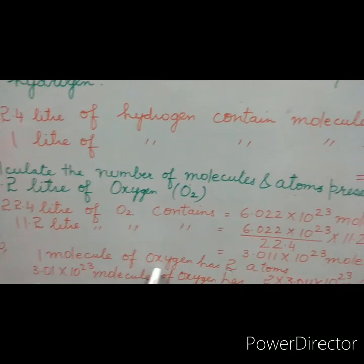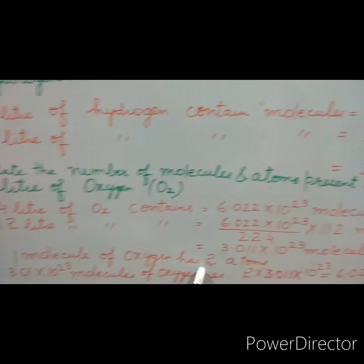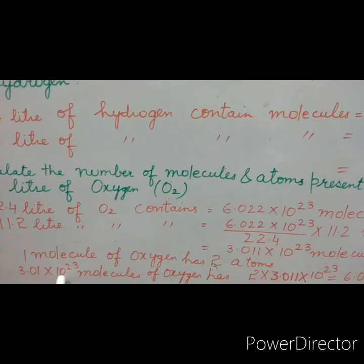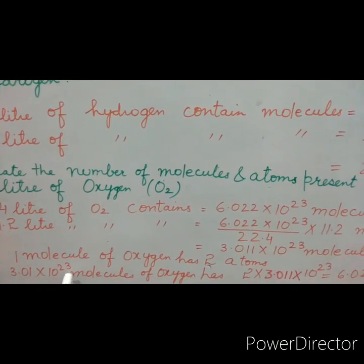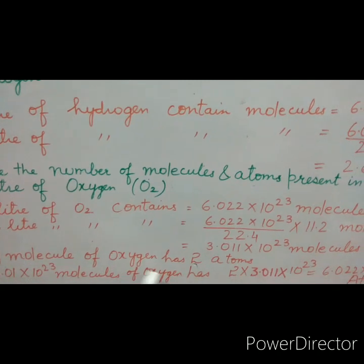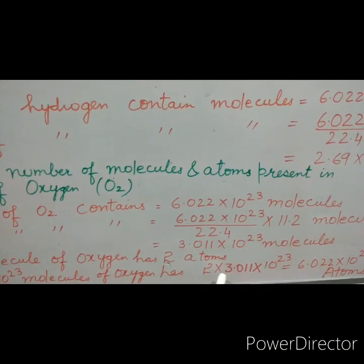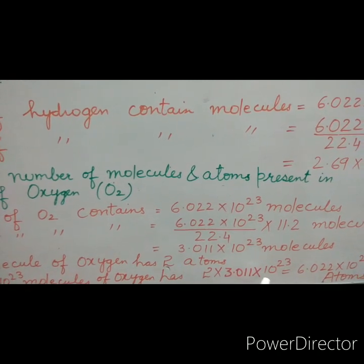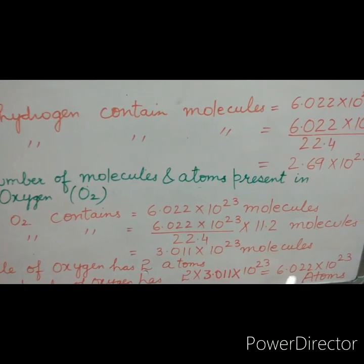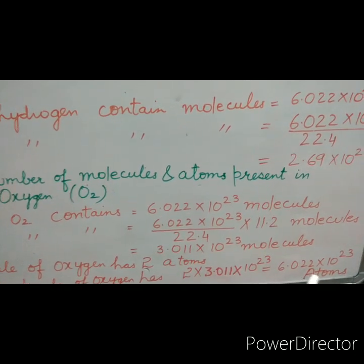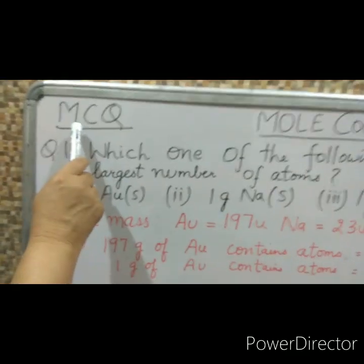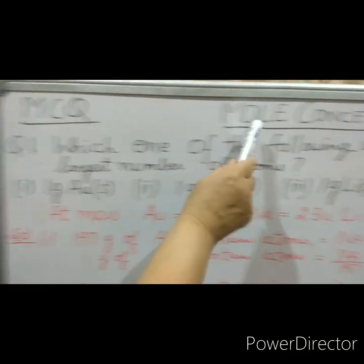We know that 1 molecule of oxygen has 2 atoms. So 3.011 × 10²³ molecules of oxygen will have 2 × 3.011 × 10²³, equal to 6.022 × 10²³ atoms.